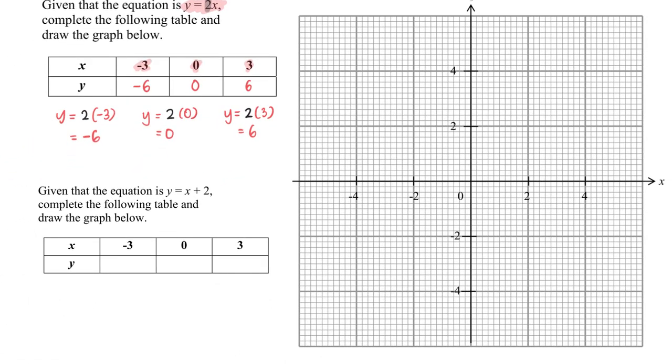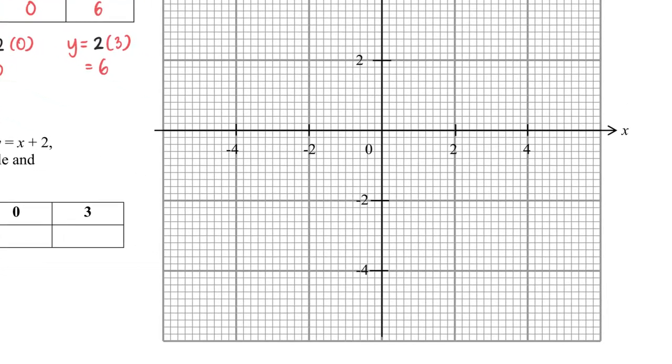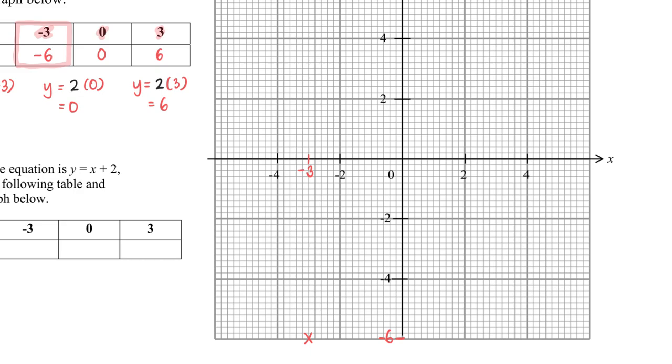All right, the first point is x is negative 3 and y is negative 6. So zooming in to the graph, negative 3 will be here, negative 6 will be here. And this particular point will be the point where x is negative 3, y is negative 6. I continue to zoom in to my next pair of values.